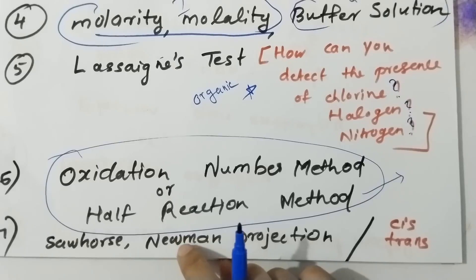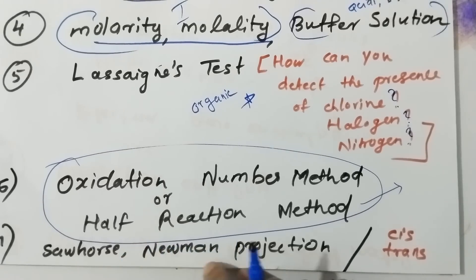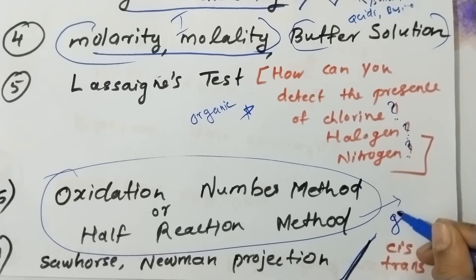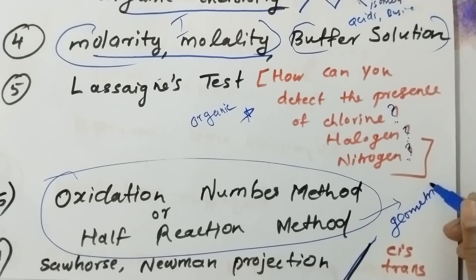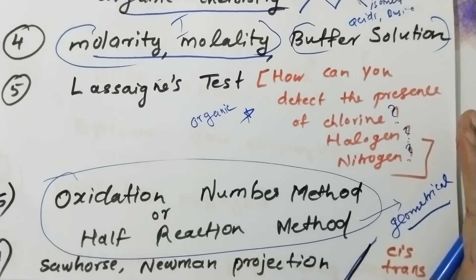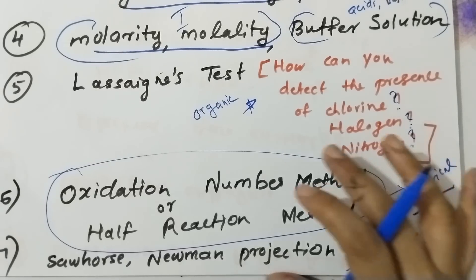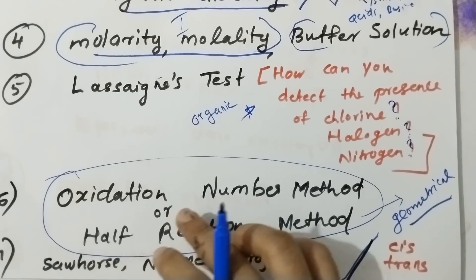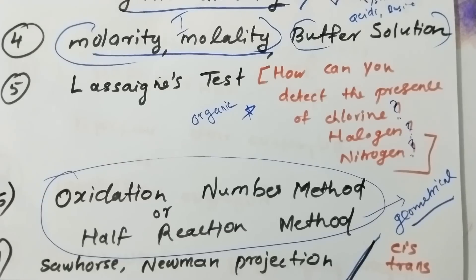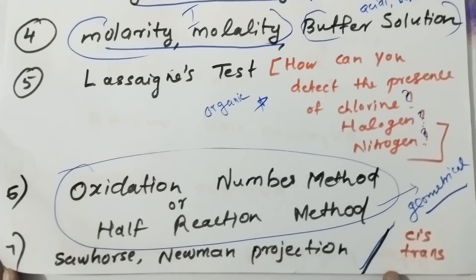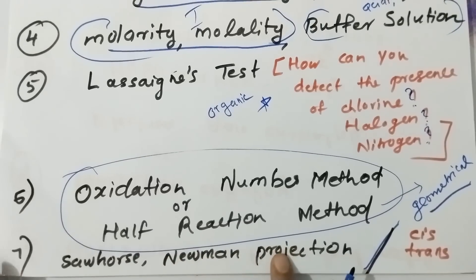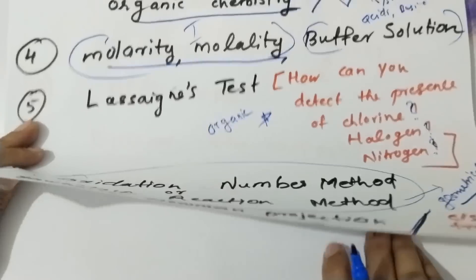Next, we need hydrocarbon — this is very important. Who is Newman projection? This covers geometrical isomers. Draw geometrical isomers — cis and trans. Draw Sawhorse projection, Newman projection, and eclipsed and staggered projections. I will explain these in the video. These are three important things.